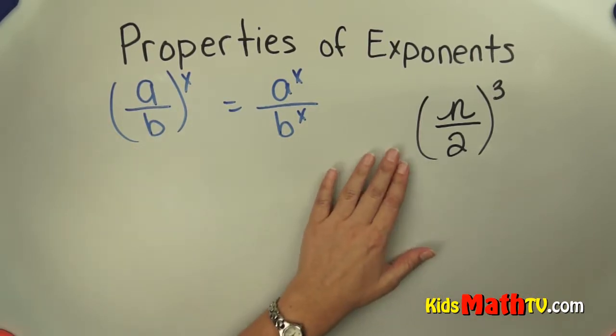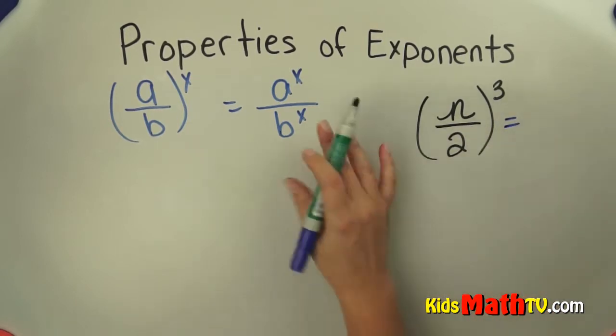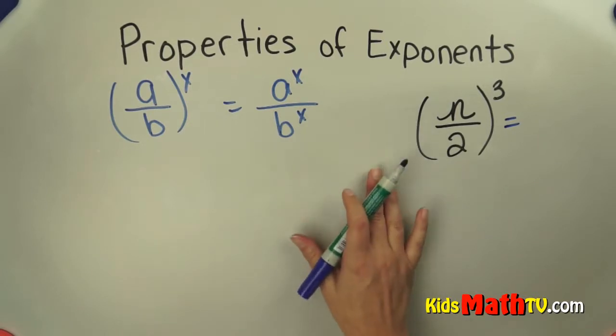So here's an example. If I have the problem n divided by 2 to the power of 3, I can use this property to help me simplify this.